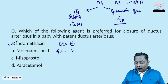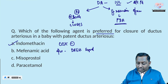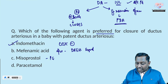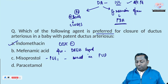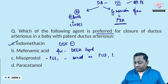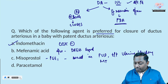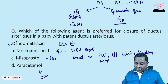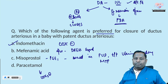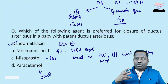Also remember, mefenamic acid is associated with DRESS syndrome — Drug Reaction with Eosinophilia and Systemic Symptoms. Misoprostol is a prostaglandin analog, utilized in patients with peptic ulcer disease, for controlling uterine bleeding, and for medical termination of pregnancy. Paracetamol is a COX-3 inhibitor used for pain management and fever. The correct answer is indomethacin, as it cuts down the supply of prostaglandins to close the ductus arteriosus.